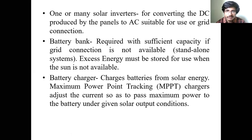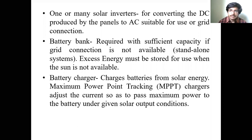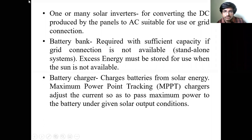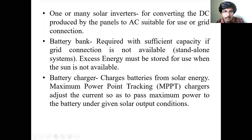We all know that the inverter converts the DC to AC. Remember, the output produced by the solar cell is always DC, and we will convert it to AC to feed the grid. Next, battery bank — required with sufficient capacity if grid connection is not available.